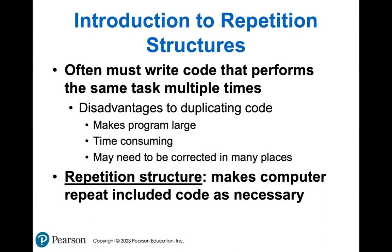When you have to write code within the same program that's going to repeat itself many times, instead of writing it out for every single iteration, you just write one repetition structure that's going to duplicate that code within itself for you. The term is: a repetition structure makes the computer repeat included code as necessary.